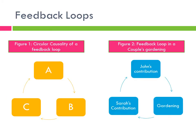On this slide, we have two graphical representations of feedback loops. Figure 1 shows the basic circularity involved in a feedback loop. Each element has an effect on the next until the last element feeds back the cumulative effect into the first part of the cycle. Thus, A affects B, which in turn affects C, which feeds back to A, and so on.